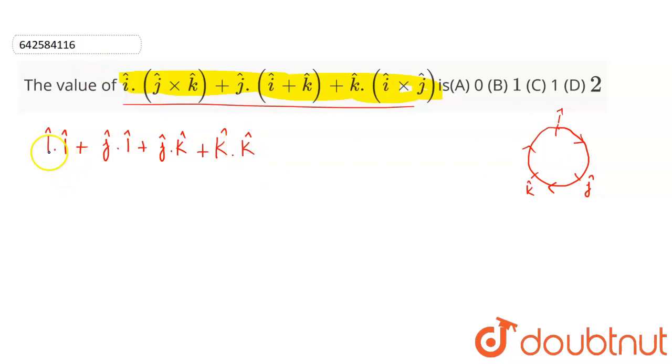Now here i cap dot i cap is basically 1, as the dot product of a vector with itself is 1.